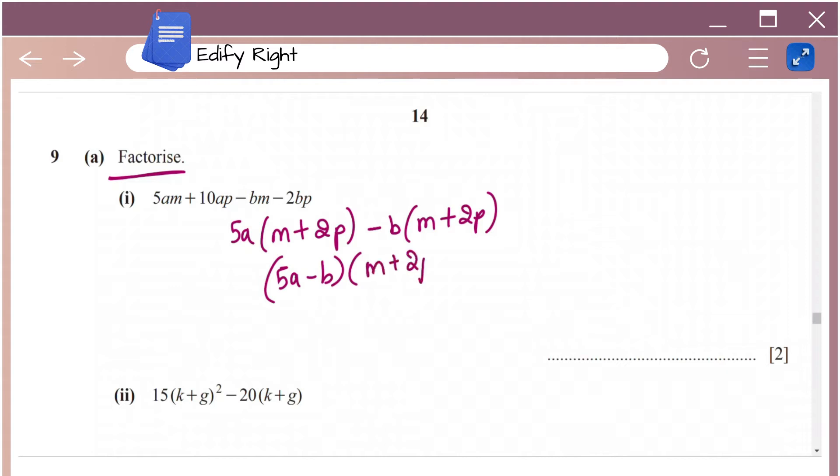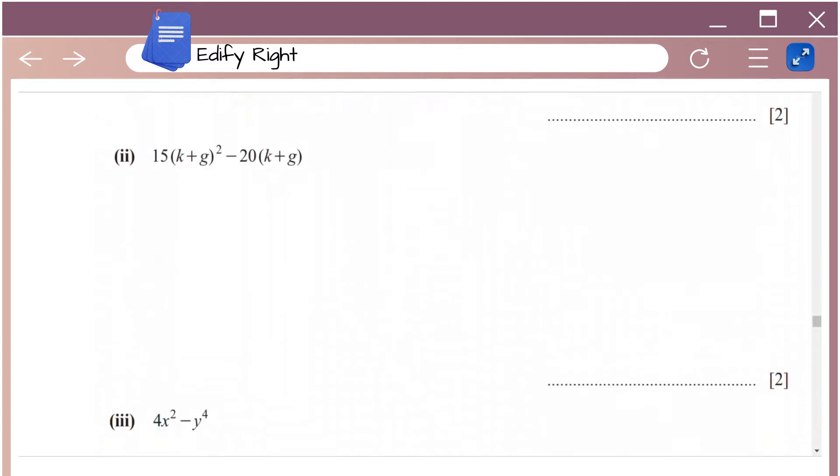So that's how you factorize this expression. Next you have 15 times k plus g whole square minus 20 times k plus g.